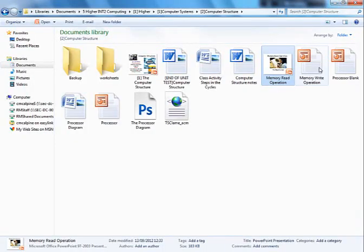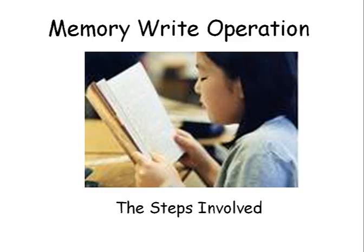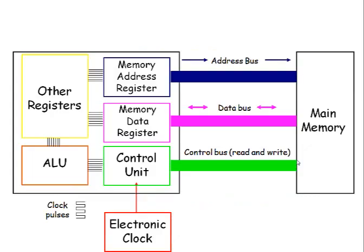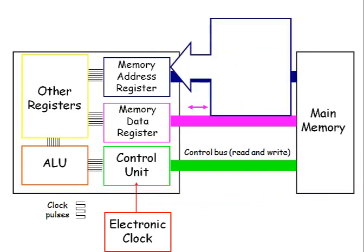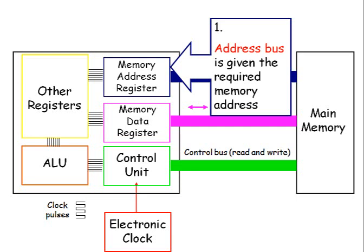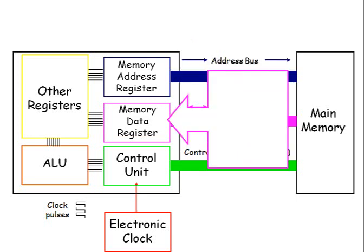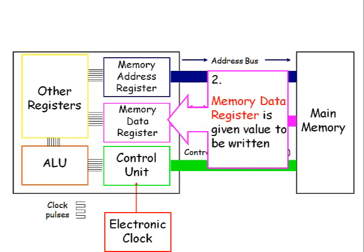Now quite similar but definitely different is the write operation, which has similar steps that happen in a different order. Think about how you would write on a blackboard — if there were several blackboards in your school, which one would you choose to write on? You need to know what you're going to write and where to write it. So the first thing is the same as before: the address bus is given the required address that needs to be written to. But because we're doing a write we also need to know what we're going to write, so the memory data register is given the value that's going to be written to main memory.